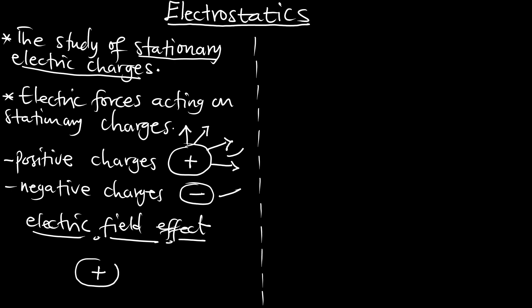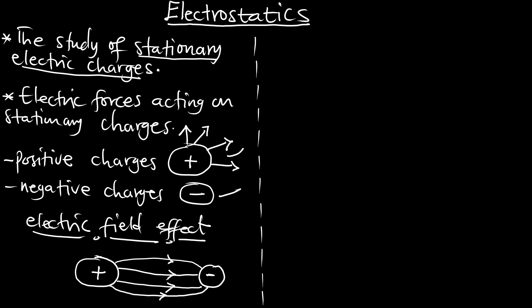Anytime there is a positive charge, there is a space around that charge body in which it exerts a force on other charged bodies around it. So if this is a positive charge and I bring another negative charge around it, there is going to be a force that exerts itself onto the negative charge. The space at which this effect can happen is the electric field — the surrounding space where the effect of the positive charge can be experienced.